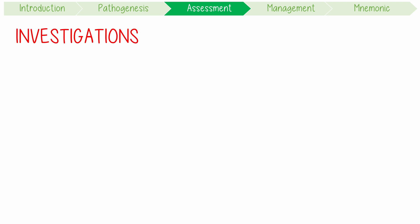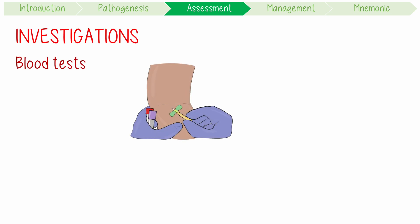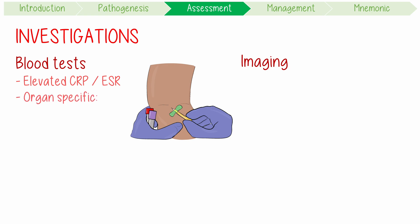To investigate Takayasu arteritis, consider blood tests and imaging after a thorough history and exam. Bloods might show elevated inflammatory markers like CRP and ESR. Organ-specific biomarkers like EUCs and liver biochemistry might reveal damage from reduced perfusion. Importantly, there are no diagnostic blood tests for TAK and patients are usually ANCA negative.